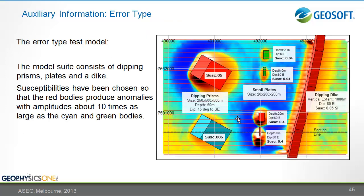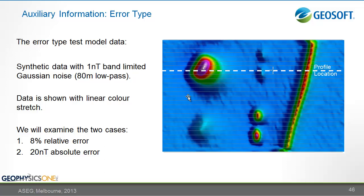The type of error chosen controls the misfit distribution in the solution, and the size of the error controls the amount of structure in the inversion result. We examine the difference between relative and absolute errors using a synthetic model with two susceptible dipping prisms, plate-like targets, and a dike, where the red bodies produce anomalies about ten times larger than the cyan and green bodies. We compare 8% relative error versus 20 nanotesla absolute error inversions.